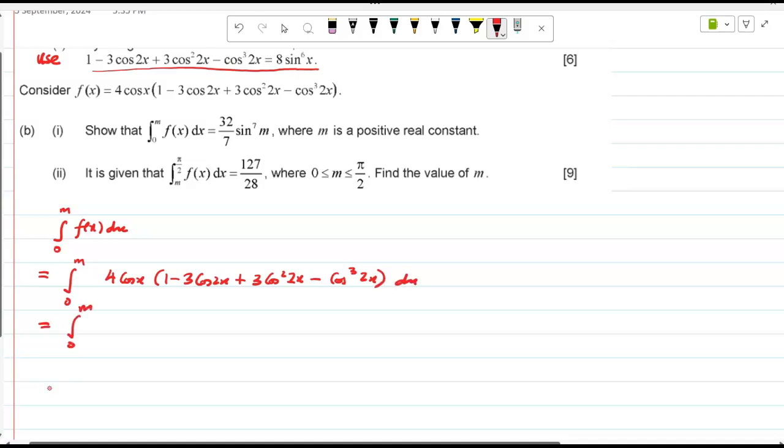That is equal to 0 to m, 4 cos x, now this entire thing is that formula, let's go 8 sin 6x dx, so 8 into 4 is 32, 0 m cos x sin 6x dx.